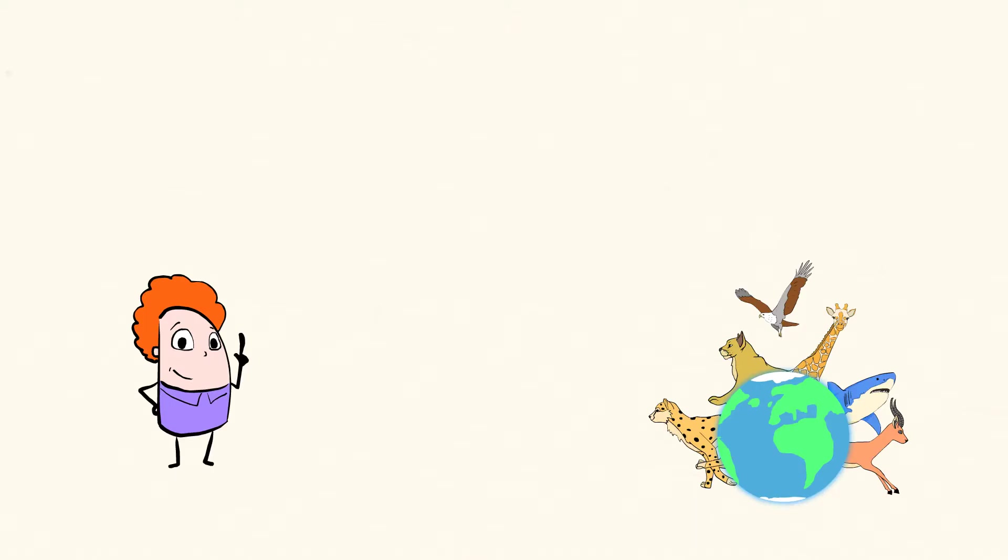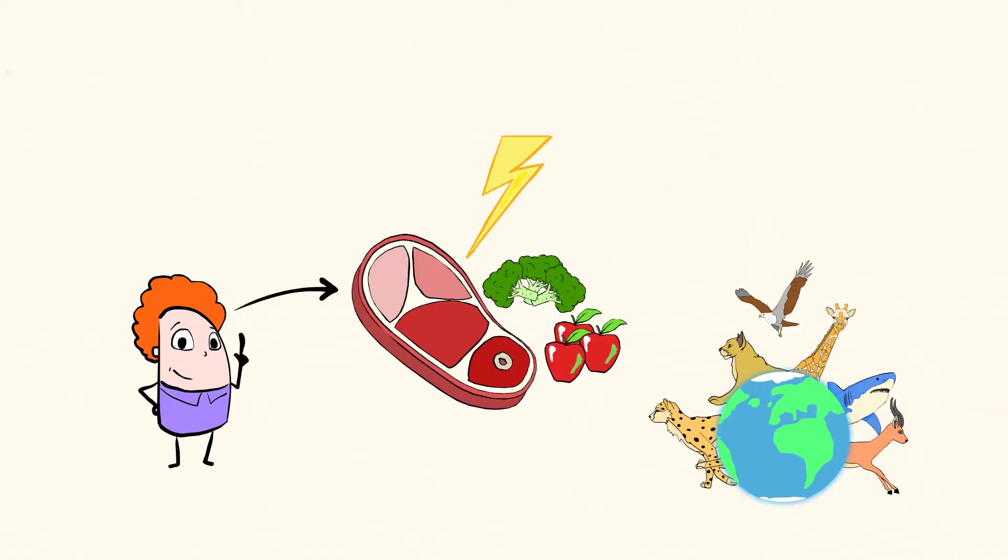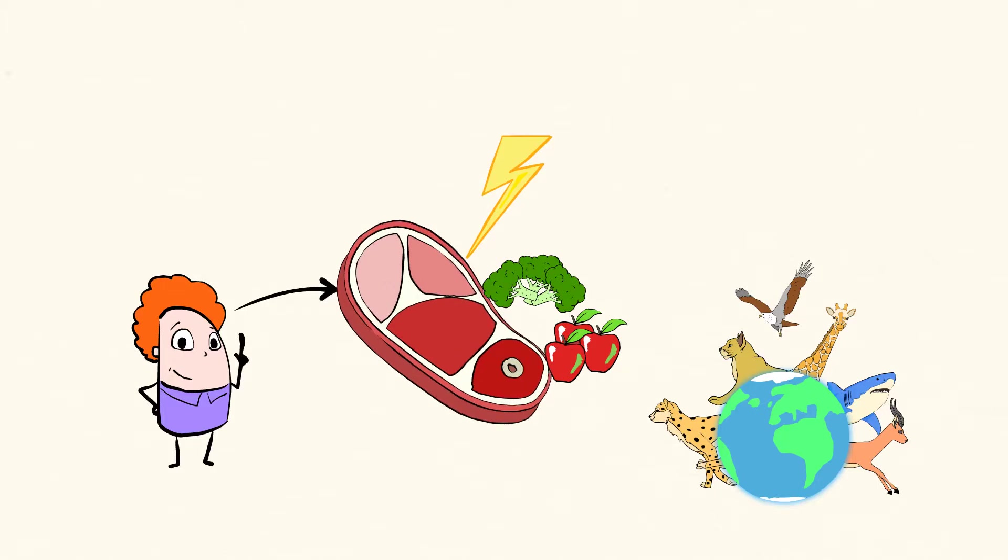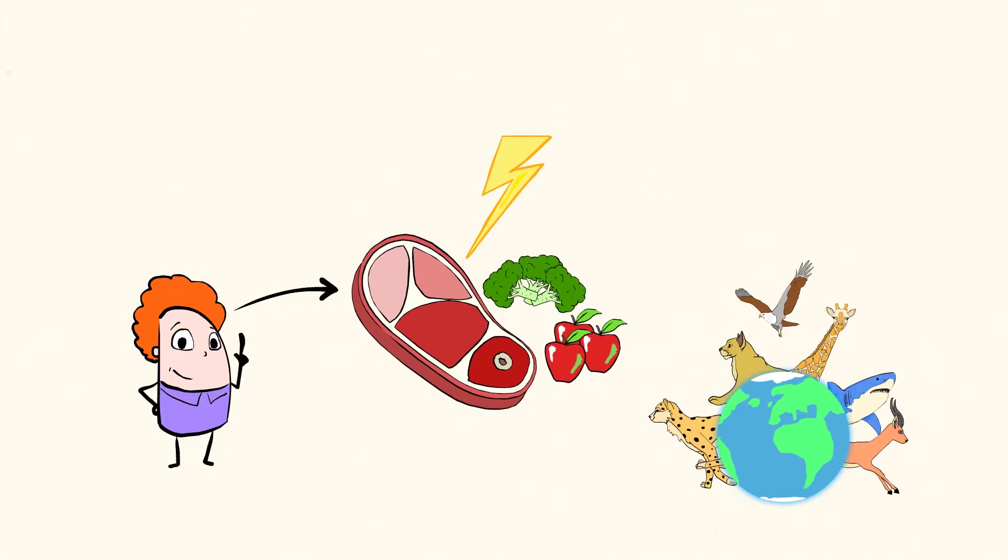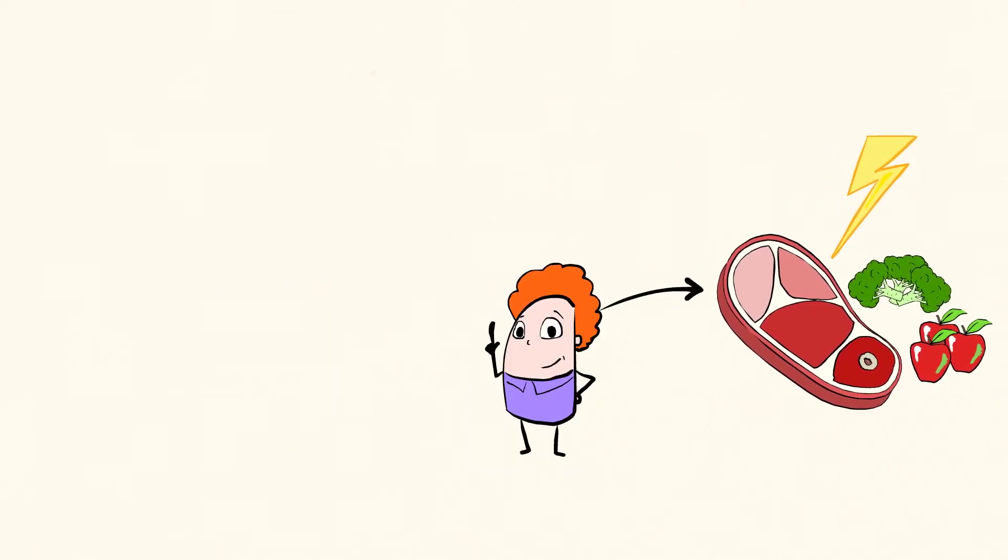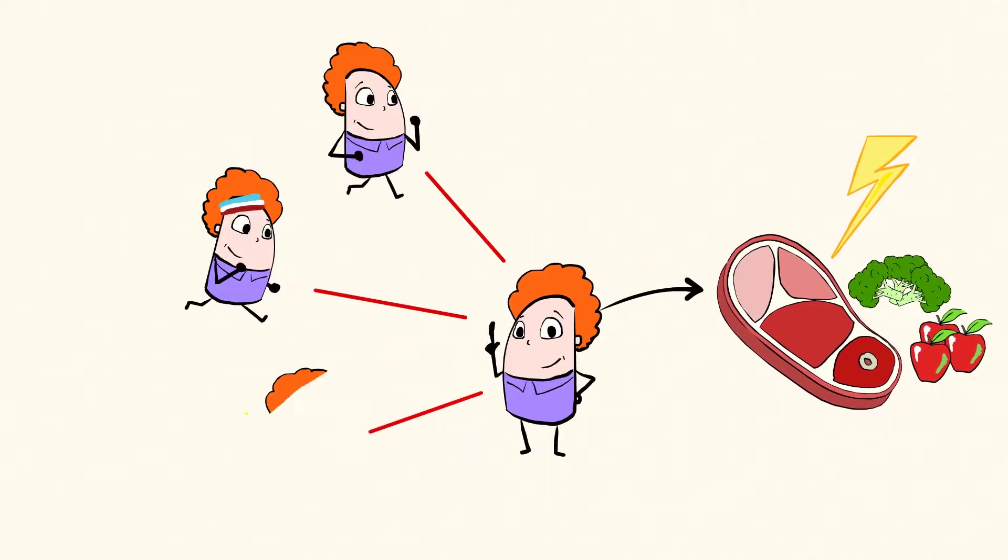We, just like any other member of the animal kingdom, need food for energy in order to live. We eat things like meat, fruits, and vegetables. These foods give us the energy we need to walk, run, and think.